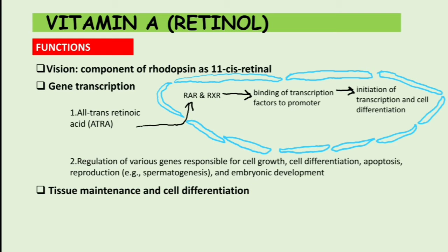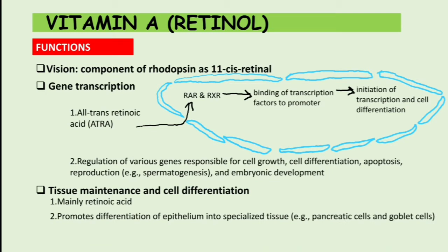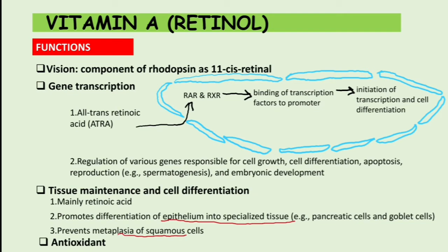Another function of Vitamin A is tissue maintenance and cell differentiation, which is the role of retinoic acid. Retinoic acid promotes differentiation of epithelium into specialized epithelial tissue, for example in pancreatic cells and goblet cells. It also prevents metaplasia in squamous cells — metaplasia being the change from one cell type to another, such as from squamous to transitional or cuboidal. Vitamin A can also act as an antioxidant.